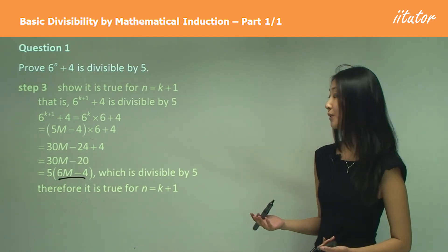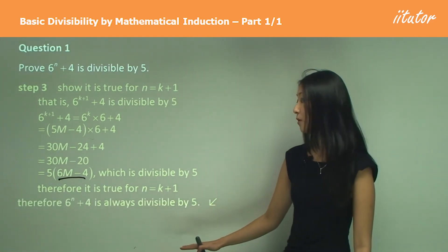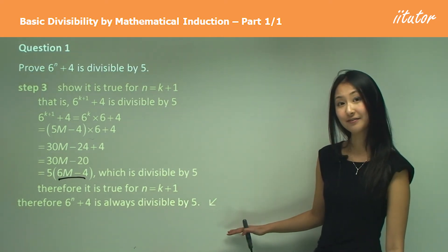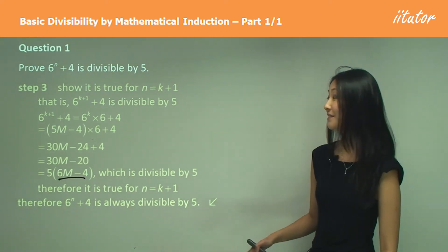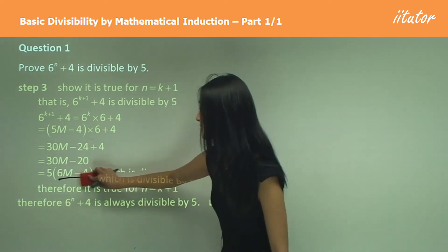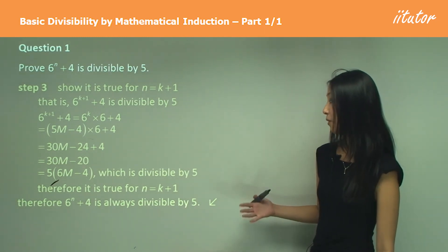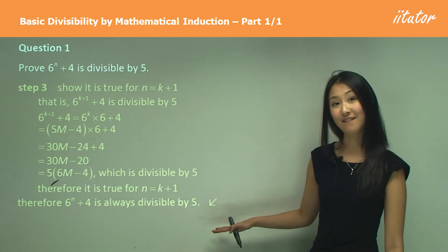So how we write the conclusion for this is: therefore 6 to the power of n plus 4 is always divisible by 5. Okay, so as previously we need to have this conclusion here, but the conclusion, rather than saying it is true for n is greater than zero or one, we say it's always divisible by 5.